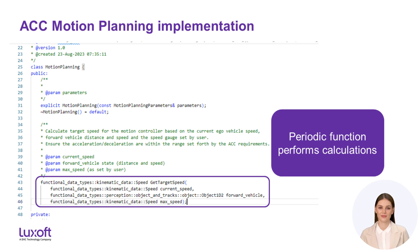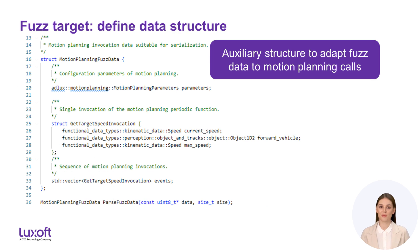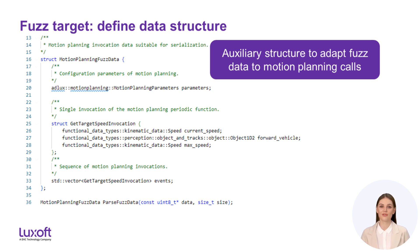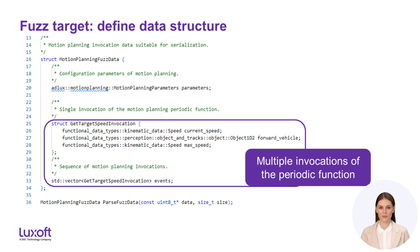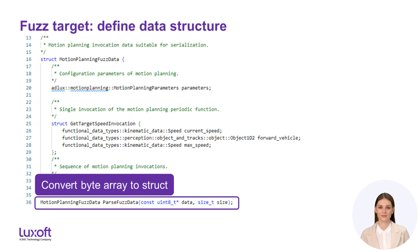You may be surprised how devious fuzzers are at generating even numeric data. Fuzzing frameworks are not aware of our component's interface — they produce data in the form of byte arrays. We need to create a fuzzing target in order to feed the binary data into the motion planning component. We start by defining a data structure corresponding to the inputs of the motion planning component. The structure will contain the configuration parameters of the motion planning component. We model multiple invocations of the function get_target_speed to discover any hidden bugs dependent on the state of the software component. We also implement a function that would create the structure from an array of bytes.